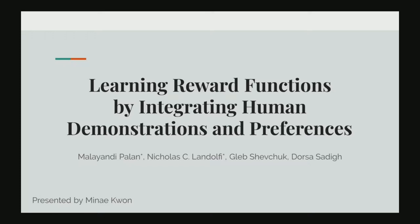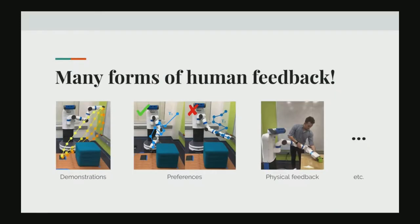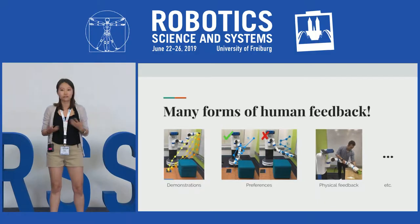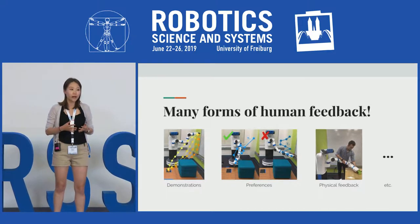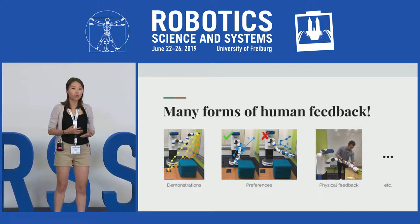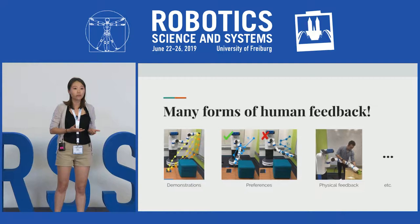Hi, I'm Minay and I'll be presenting for Andy today. So when we learn from humans, there are many forms of feedback we can use, such as demonstrations, preferences, physical feedback, et cetera. We typically pick one form of feedback and use data generated in that form to learn from humans.